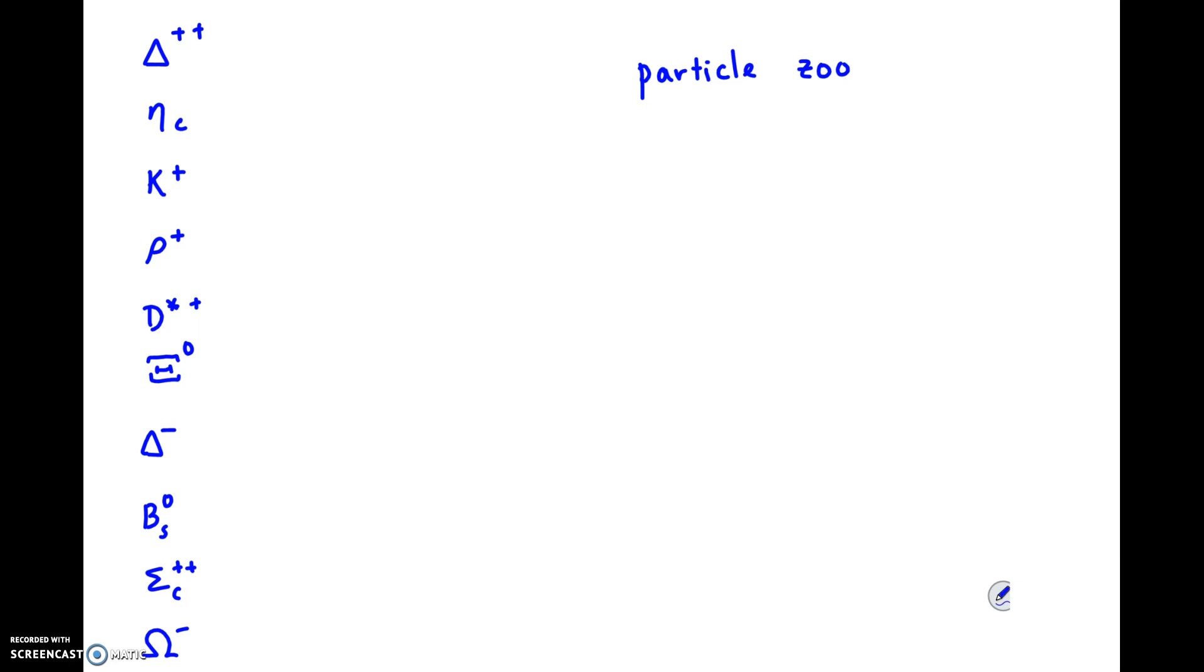So the particle zoo was posing a problem, because no one understood what was inside these particles. Are they fundamental? Can they be broken into smaller parts? Why are there so many? There are moments in physics when we make a change because we want to find a simpler model. And that's what happened here. Two physicists, Murray Gell-Mann and George Zweig, came up with a new model that simplified everything: the quark model.